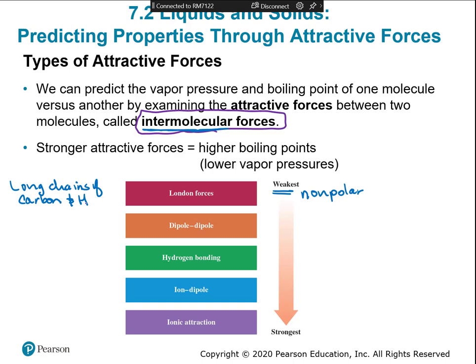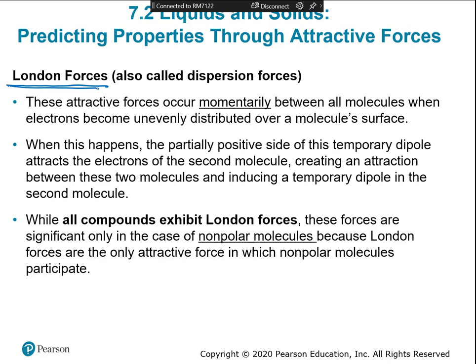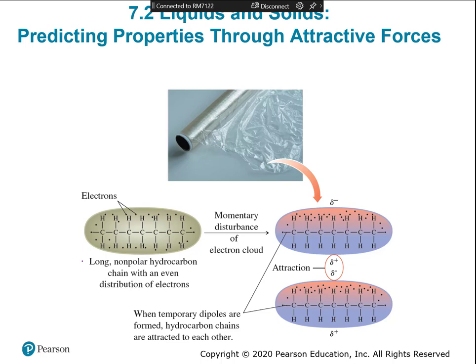London forces, also called dispersion forces or van der Waals forces, begin to appear in carbon chains with more than five or six carbons. They arise from a temporary electron imbalance: occasionally more electrons accumulate around the hydrogens than the carbon, creating a very slight, fleeting negative charge on one side of the molecule and a slight positive on the other. As soon as this forms, it goes away - it's not permanent.